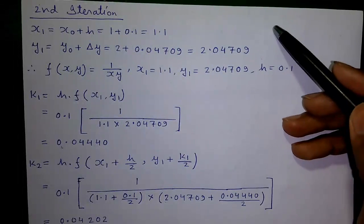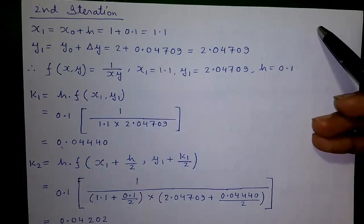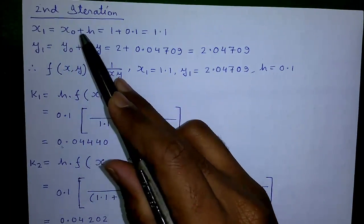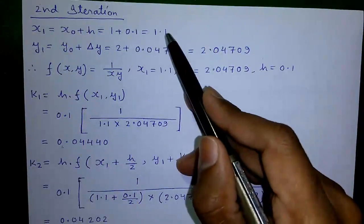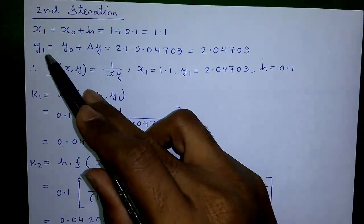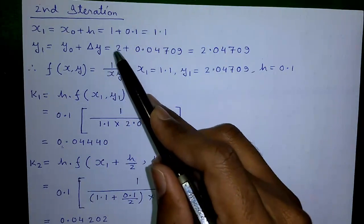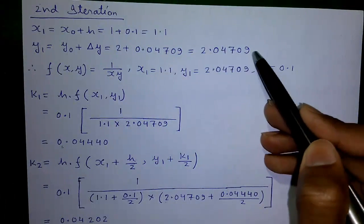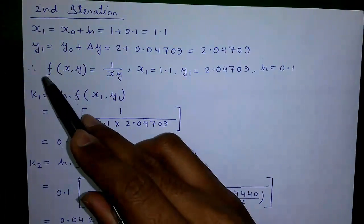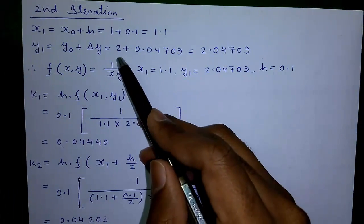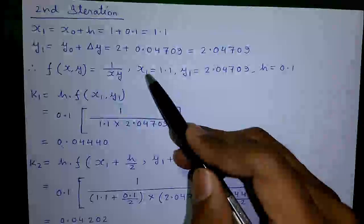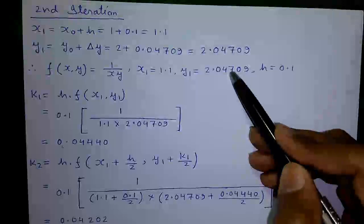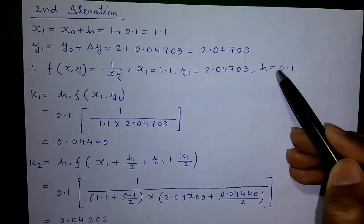But we need to find y(1.2), so we need to do a second iteration. In the second iteration, x1 equals x0 + h equals 1 + 0.1 equals 1.1. y1 equals y0 + Δy equals 2 + 0.04709 equals 2.04709. f(x, y) equals 1/(xy) remains the same, but now x1 equals 1.1 and y1 equals 2.04709, and h equals 0.1.